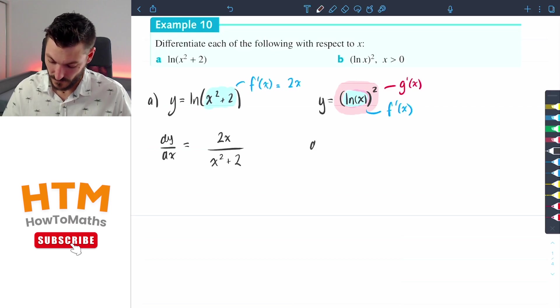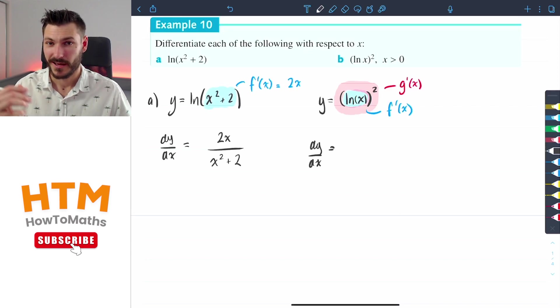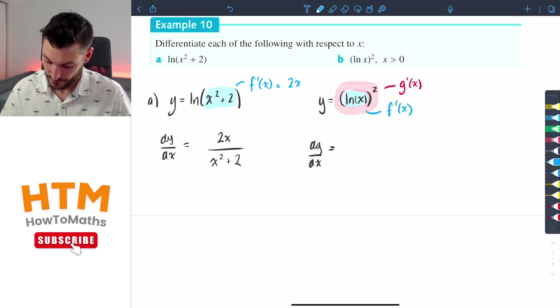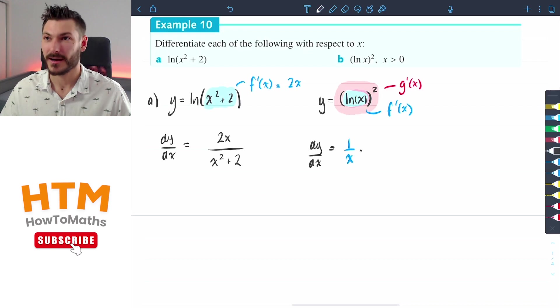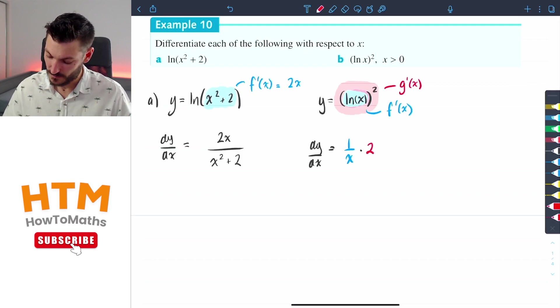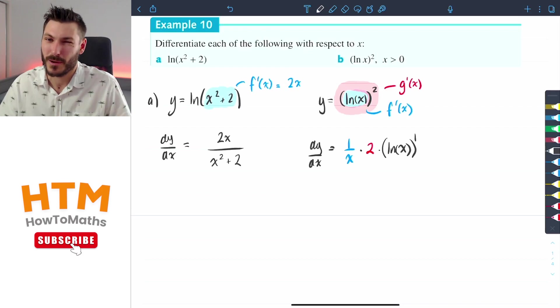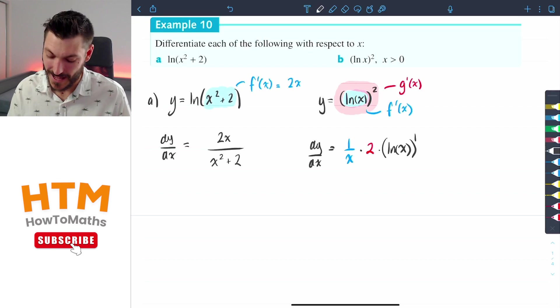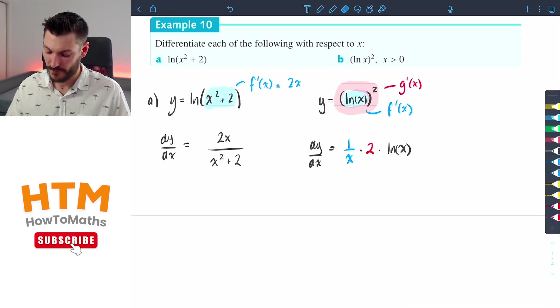So the derivative of y with respect to x is going to equal the inside function derived. Now ln of x derived is just 1 over x, so I'm going to keep that color coded 1 over x multiplied by the outside function derived, which is going to be just 2 times ln x. Now it's technically ln x to the power of 1 because we reduce the power from 2 to 1, but we don't really need to write that - it just adds confusion - so we're just going to have ln of x.